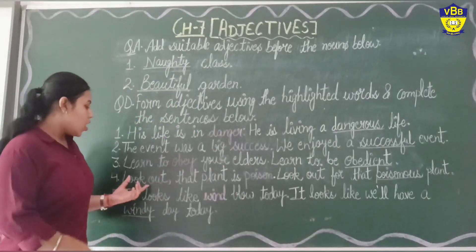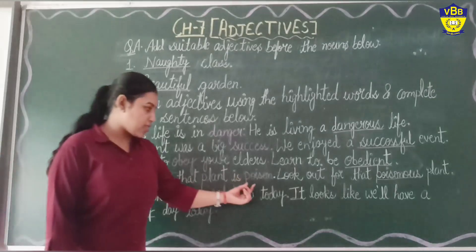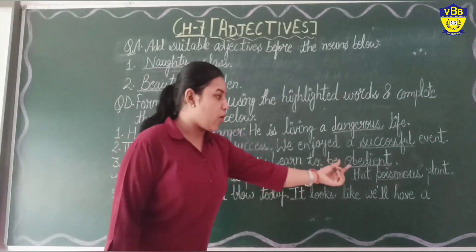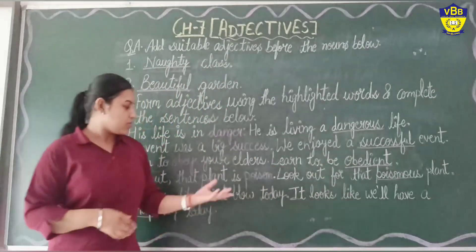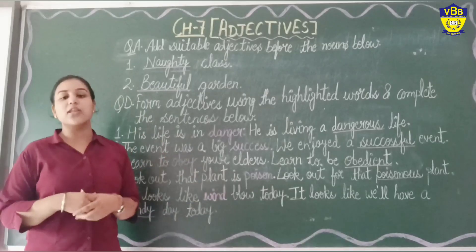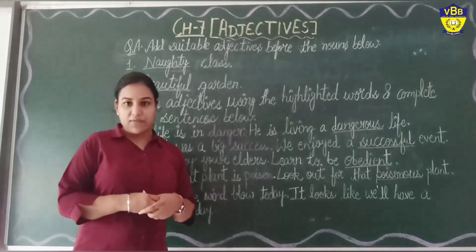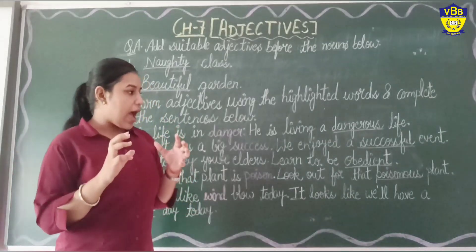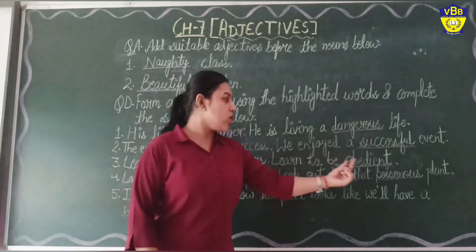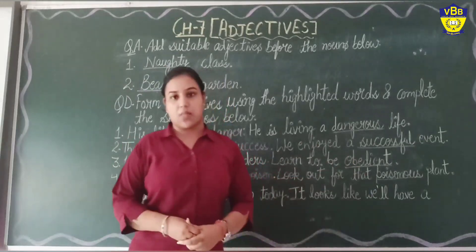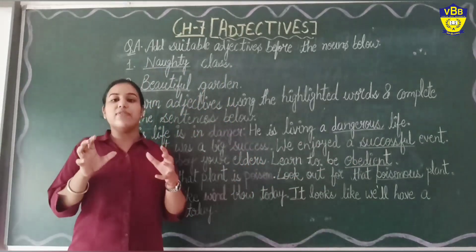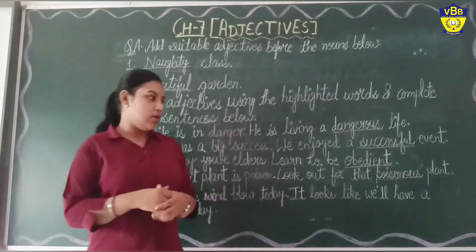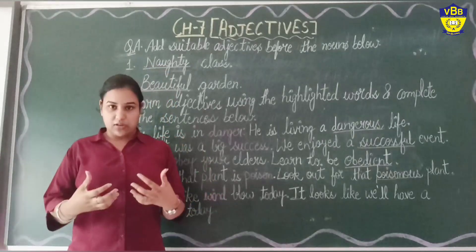Fourth sentence: 'Look out, that plant is poison' becomes 'Look out for that poisonous plant.' The word 'poison' is given. We add the suffix -OUS and we get the adjective 'poisonous.'